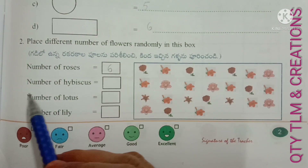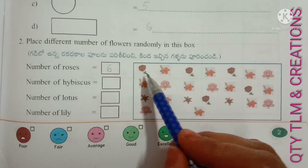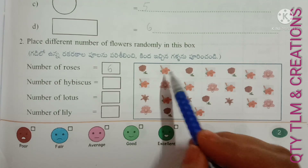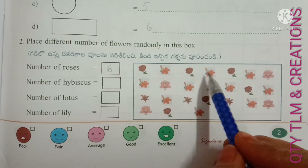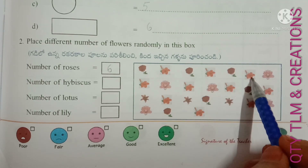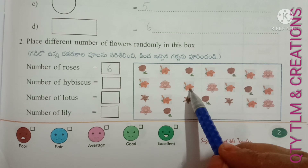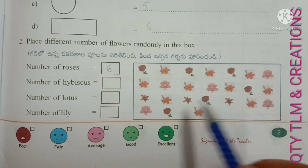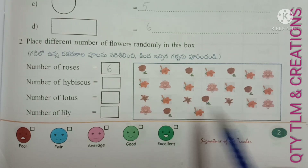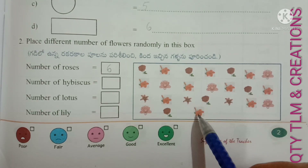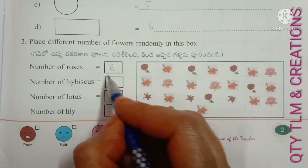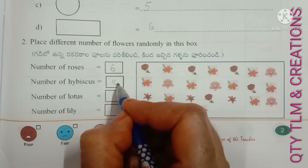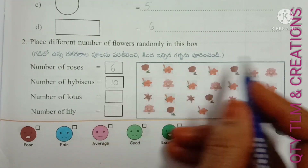Number of hibiscus. This is hibiscus. So, 1, 2, 3, 4, 5, 6, 7, 8, 9, and 10. There are 10 hibiscus flowers in the box.